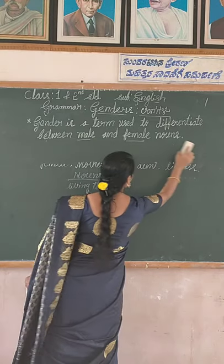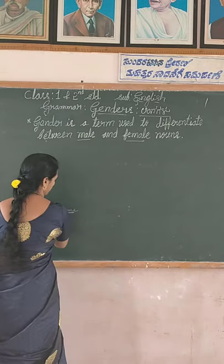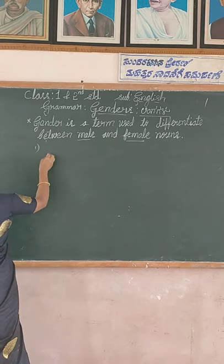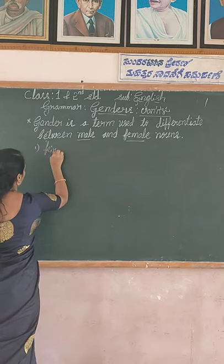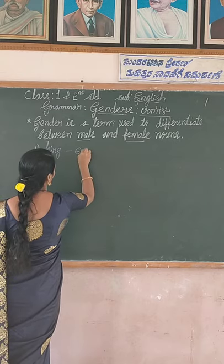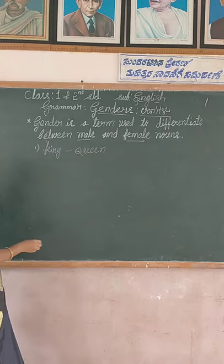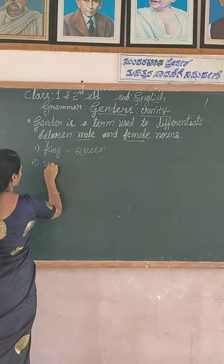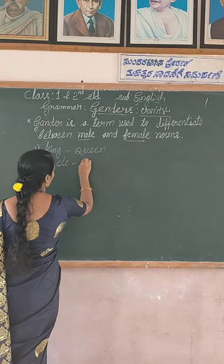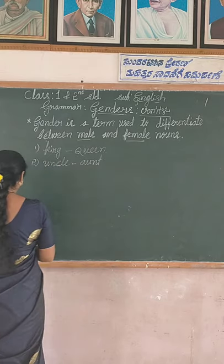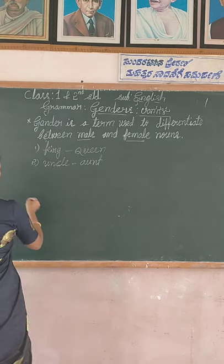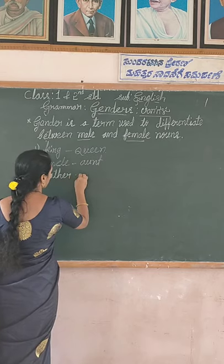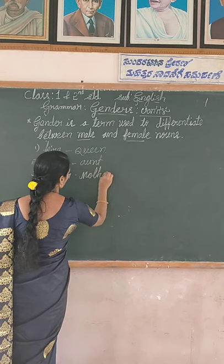Okay students, I give you different examples. Next: king, queen. Uncle, U-N-C-L-E; aunt, A-U-N-T. Tell me — anyone? Third one: father, F-A-T-H-E-R; mother, M-O-T-H-E-R.